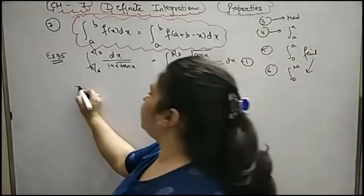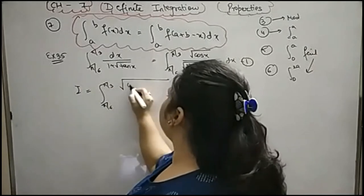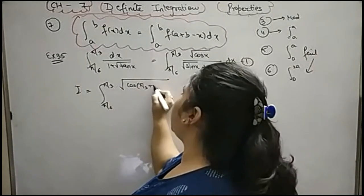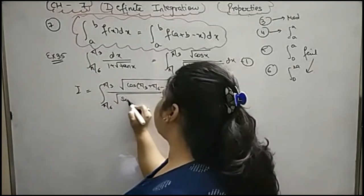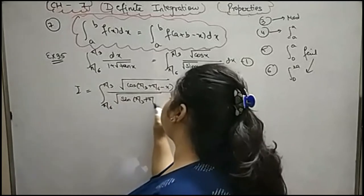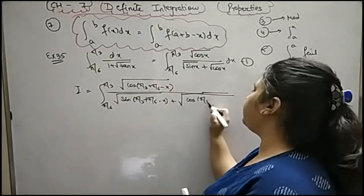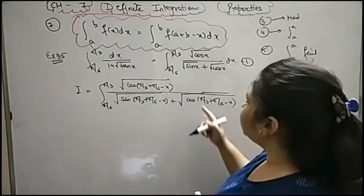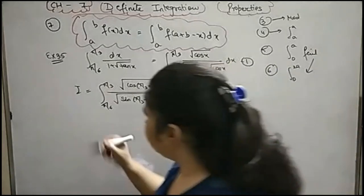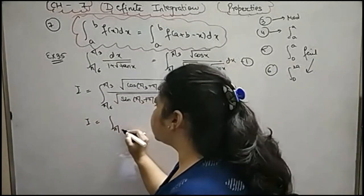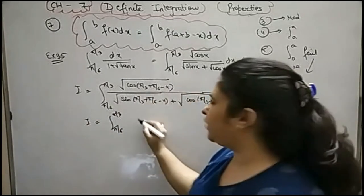What is the property? Property is π/6 to π/3, root cos(A+B-X) upon root sin(A+B-X) plus root cos(A+B-X). Let me tell you: π/3 plus π/6, how much is it? π/3 plus π/6? π/2. That is 90 degrees. π/2 minus X.